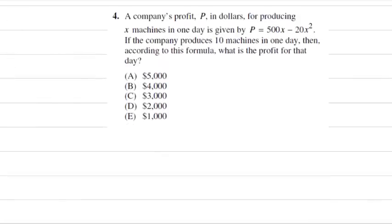Here's a problem from College Board's 2011 practice test. A company's profit in dollars for producing X machines in one day is given by that function. If the company produces 10 machines in one day, then according to this formula, what is the profit?